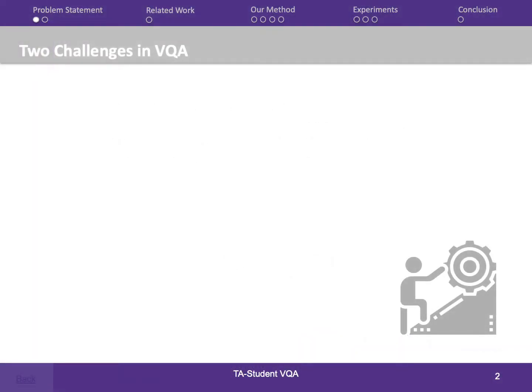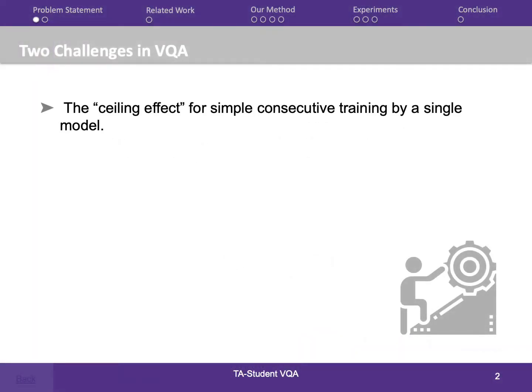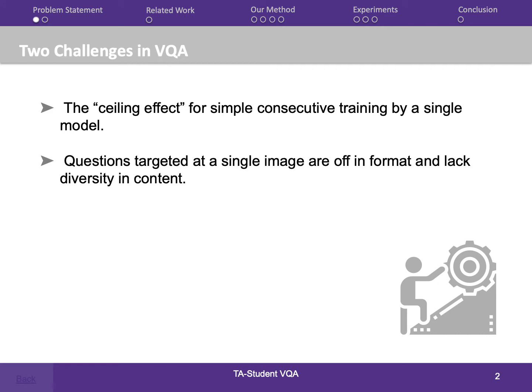There are two main challenges in visual question answering. The first one is that the ceiling effect for specific questions is difficult to overcome with simple consecutive training. The second challenge is that even state-of-the-art datasets are of large scale, questions targeted at a single image are often formulaic and lack diversity in content.